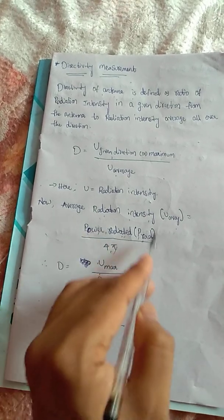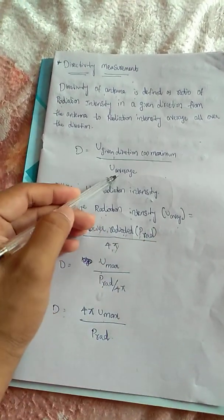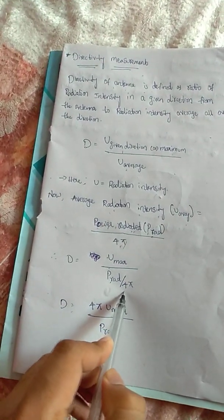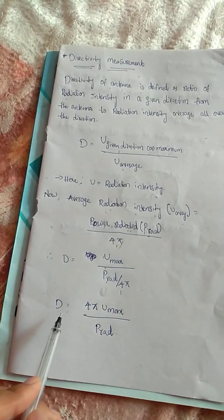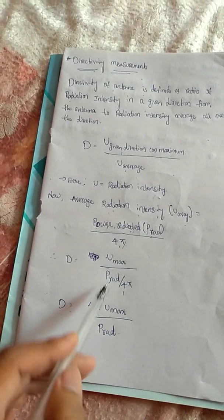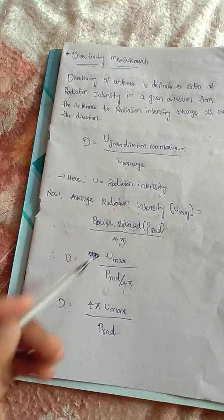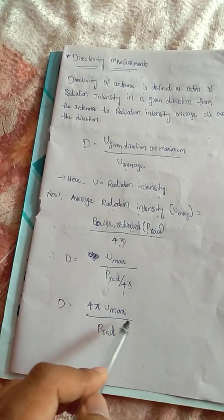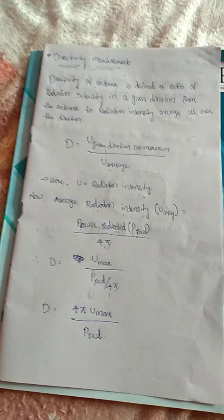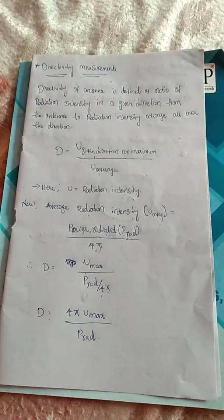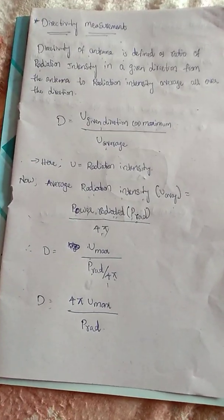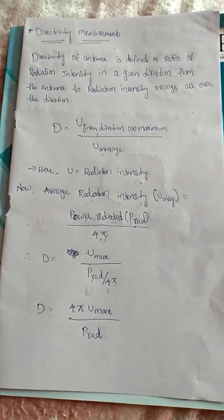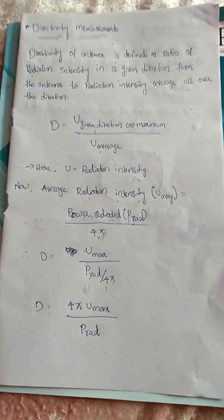This — D equals 4 pi times U max divided by power radiated — is one of the important expressions to estimate or measure the directivity, that is, to calculate the directivity.